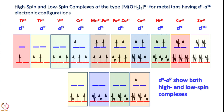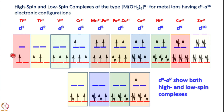Now let us look into high spin and low spin complexes of the type hexaaqua M with a particular oxidation state for metals having d1 to d10 electronic configuration. For the 3D series starting from d1 to d10: d1 the most common is titanium 3+, d2 titanium 2+ has 2 electrons, vanadium 3+ has 3 unpaired electrons, and for d4 chromium 2+ we have 4 unpaired electrons. This entire series represents high spin complexes, and for d5 we have all levels singly occupied.